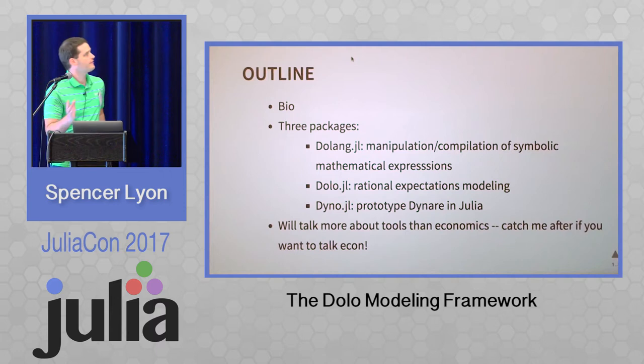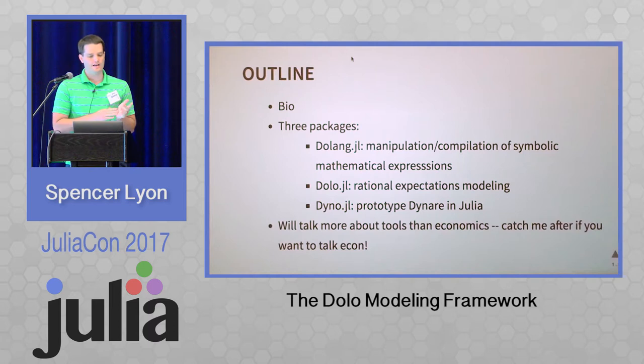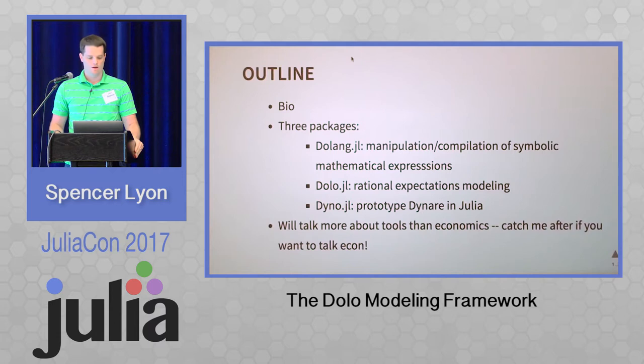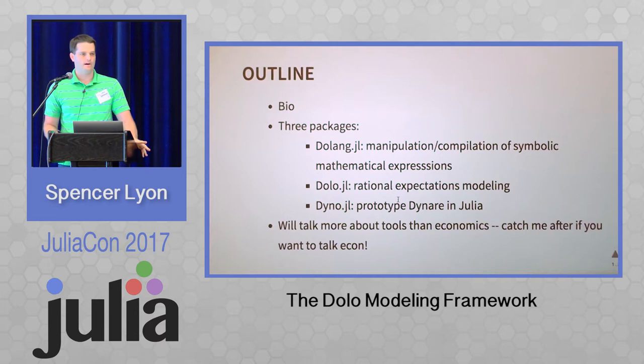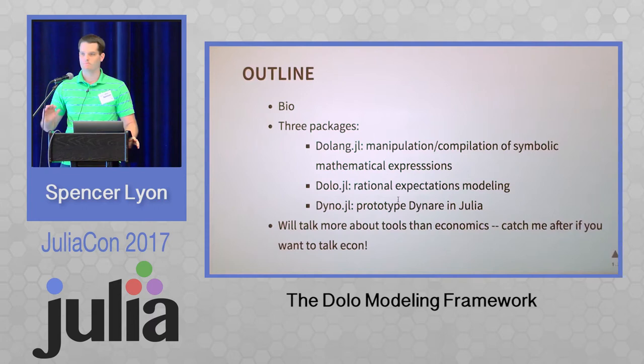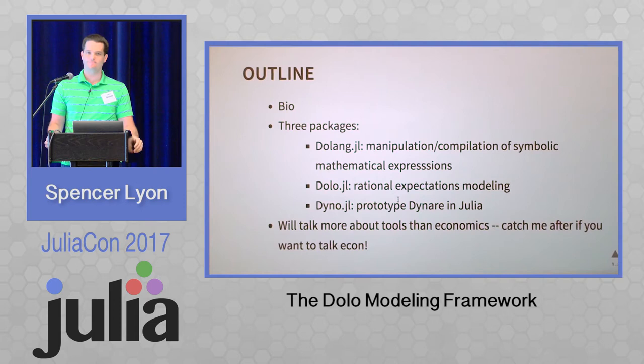I'll give a one-minute intro to who I am, and then I want to talk about a collection of three related packages. The first is called DoLang, a library that specializes in manipulating symbolic expressions and compiling them to efficient Julia code. Then there's dolo.jl, which leverages DoLang as a compiler and is used to solve rational expectations models. And dino.jl is a prototype of Dinere in Julia, which I'll mention briefly. As a disclaimer, I'm going to talk more about the tooling I've been building, not so much about economics — but if you're interested in that, talk to me later.